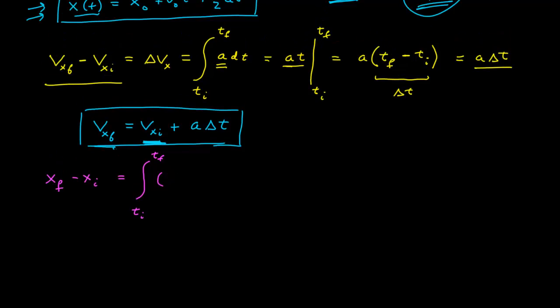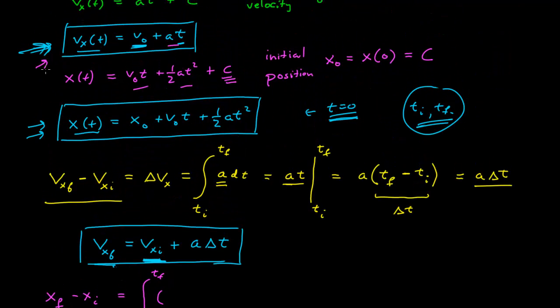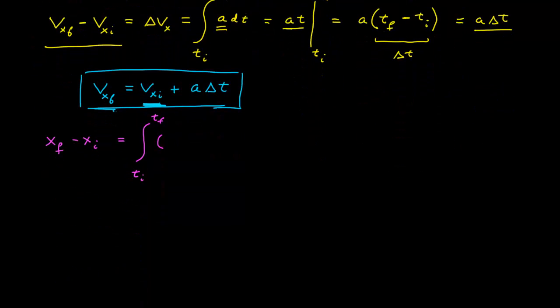Our velocity function, remember, is this one. So that's v naught minus at dt. So I can calculate this. This is v naught, the antiderivative, v naught t plus one-half a t squared evaluated between t initial, t final.